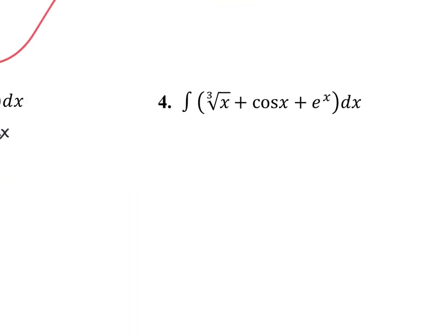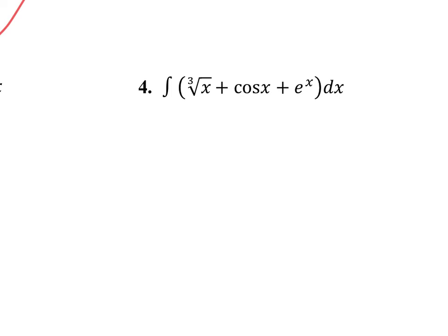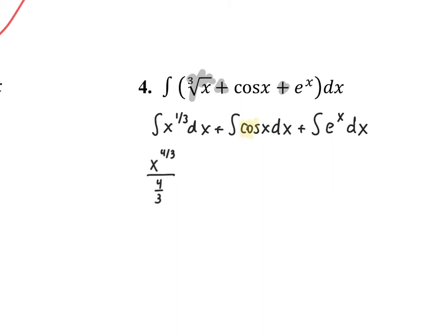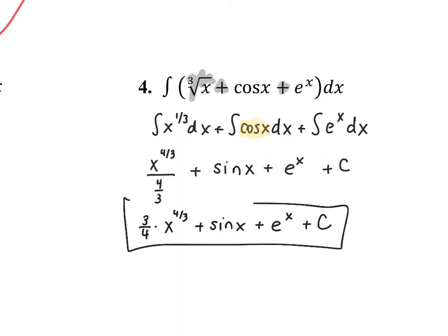In the fourth example, I split across plus signs and rewrite the radical using a rational exponent. Three separate antiderivatives: the first is a power rule — add 1 to the power and divide by the new power. Next, cosine x is the derivative of sine x. The last part, e to the x is its own derivative and its own antiderivative. Then plus c. Dividing by a fraction means multiplying by its reciprocal, which gives the final antiderivative answer.